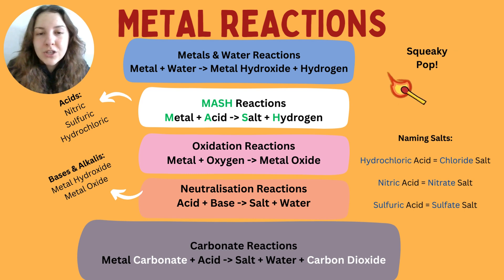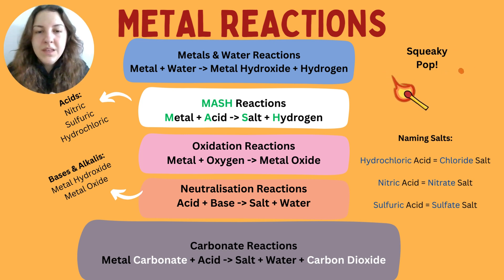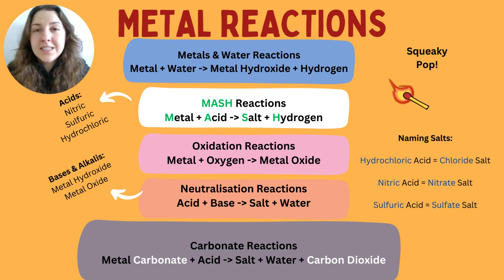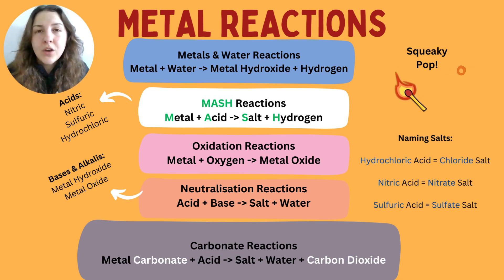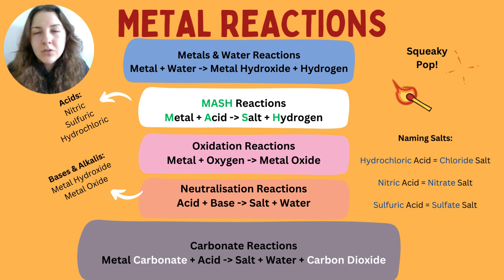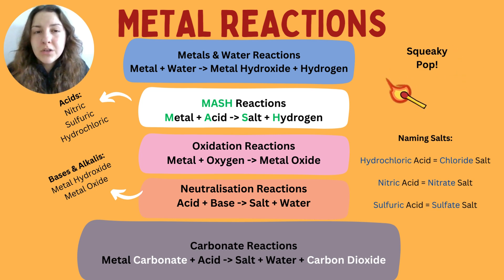You can test for neutralization simply by adding universal indicator — it will turn green. You can add it to both the acid and base and pour them together to watch the colour change happen. The last type is a carbonate reaction. If a metal carbonate — say calcium carbonate — reacts with an acid like sulfuric acid, it always produces water, a salt, and carbon dioxide. The salt is named based on the acid used: calcium carbonate plus sulfuric acid makes calcium sulfate.